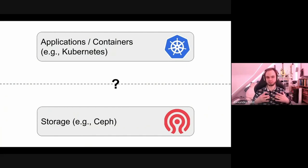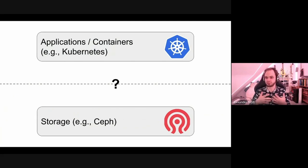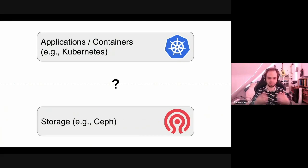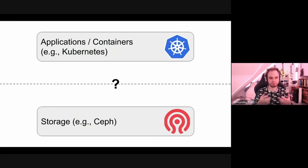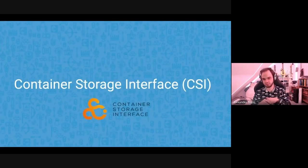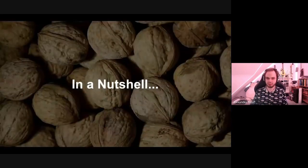We have our applications and containers running in Kubernetes, and various Kubernetes distributions out there. There's always a gap between your storage — even taking Ceph as an example — and how you plug that storage into Kubernetes. This is a key aspect enabling you to use storage in the form of Kubernetes-native objects like persistent volume claims and storage classes.